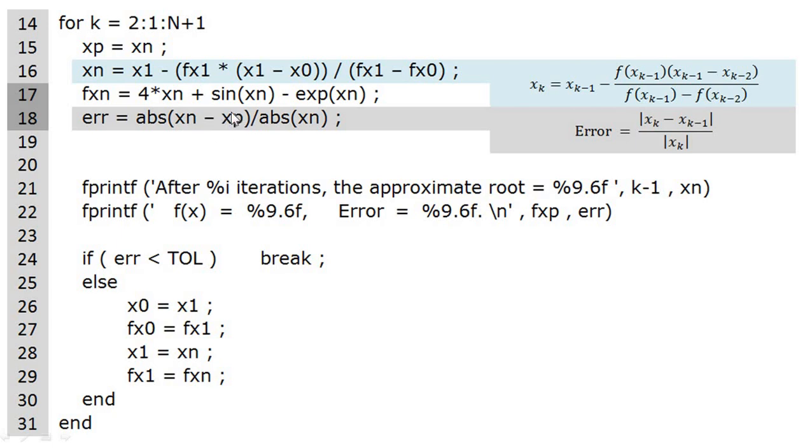We find their relative error or absolute error, whatever we want, and we copy it into err variable. Now working in the current iteration is complete. We can print the number of iterations, the approximate root value, f(x) value, and the error value as we like, and we will test if error is less than tolerance we will break the loop or stop the iterations.